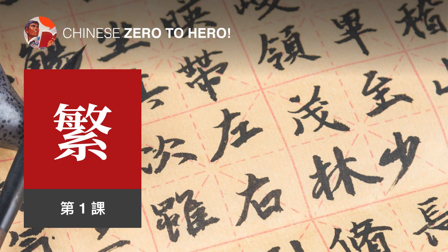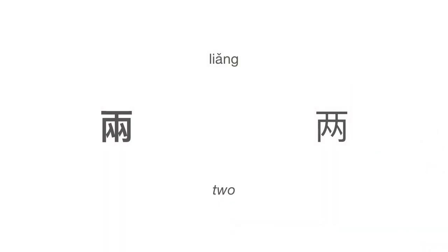Lesson 1, 第一课. Liang. Traditional characters are shown on the left, simplified equivalents are on the right, additional notes are at the bottom. Please listen and repeat.